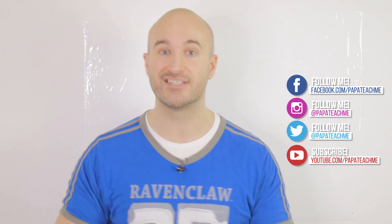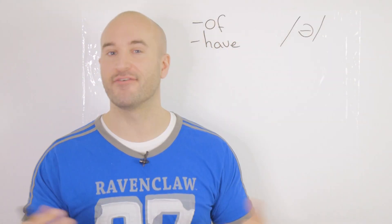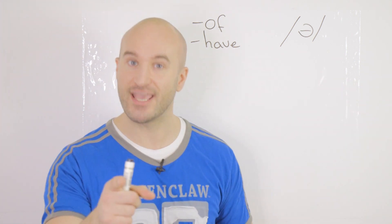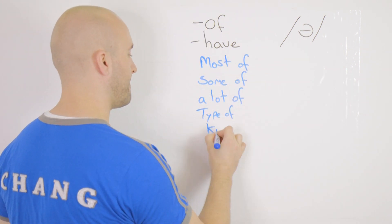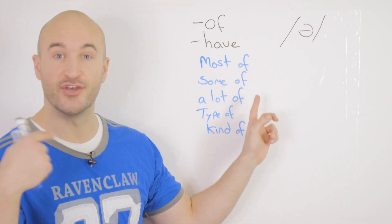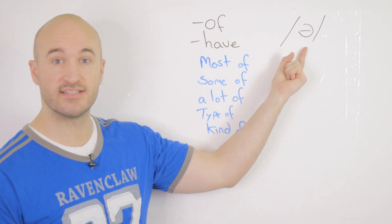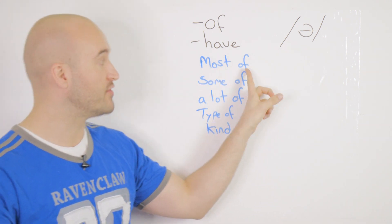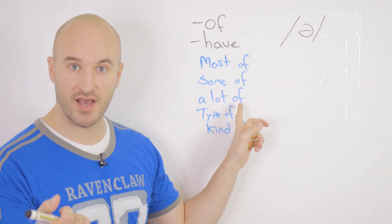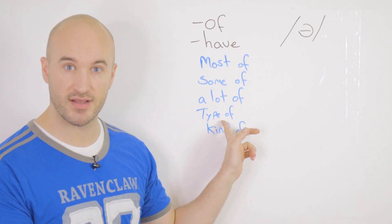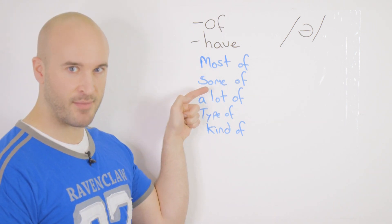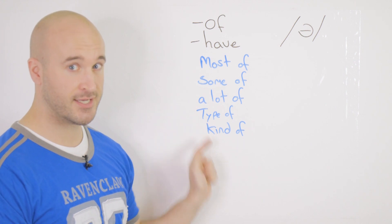The first one we change is 'of' and 'have' to the schwa. Most of, some of, a lot of, type of, kind of — anything with 'of' — you can change that 'of' to just that schwa sound. Say it with me to practice: most of → moster, some of → summer, a lot of → a lotter, type of → type a, kind of → kinder.